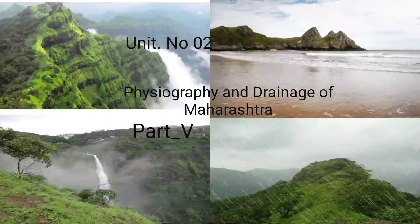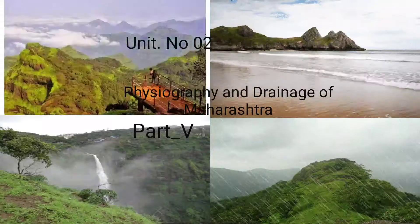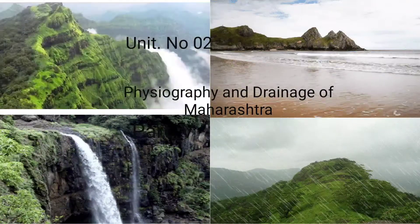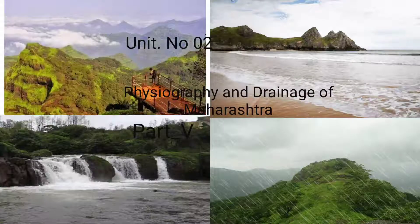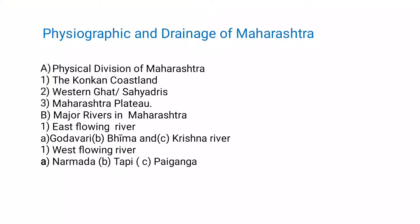Welcome back dear students. We were studying Unit Number 2, Physiographic and Drainage of Maharashtra, Part 5. The learning points covered in the previous lecture were Point A: Physical Division of Maharashtra, and Point B: Major Rivers in Maharashtra — East Flowing Rivers: Godavari, Bhima, and Krishna.